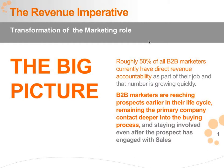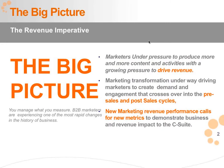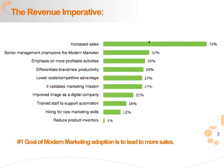Marketers are under a lot of pressure right now to produce more and more content and activities, and those activities are now being held accountable to a higher standard — to drive revenue. It's transforming how and where marketers are engaging across channels and organizations. They're getting deeper involved with the sales organization, a tighter alliance is being forged, and there are new marketing revenue performance metrics being built into expectations from the C-suite. CEOs' top area of focus is increased sales and revenue. The number one goal for a modern marketer is to generate demand and turn that into revenue-impacting results.